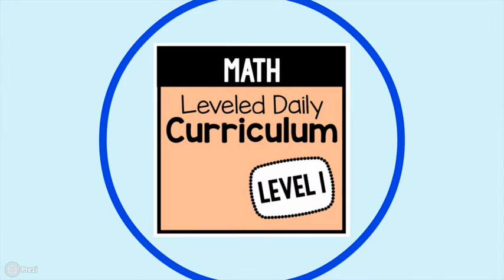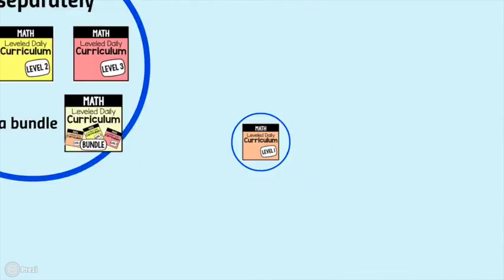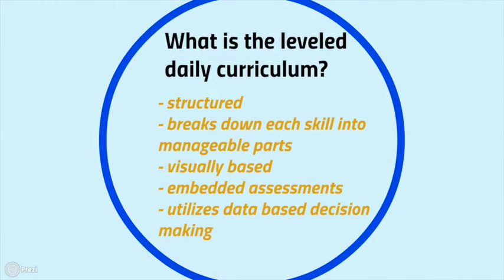Today we're going to talk about Level 1, the foundational level. This Leveled Daily Curriculum is structured. There are 9 different units. Each unit is set up the same way. The units break down each skill into manageable parts. Especially with our lowest level learners in Level 1, we're going to work on these skills very slowly and build to the higher level skill. A lot of the activities are visually based. Visuals can be really effective for our learners and help them understand the skill more quickly.